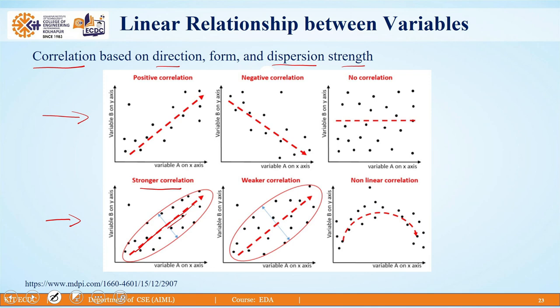In contrast, when points are far away from the center line, we call it a weaker correlation. So: points closer to the line indicate stronger correlation, and points farther from the line indicate weaker correlation. There is also another variation called non-linear correlation, where we cannot draw a straight line but can fit a curve — however, that concept is not the topic for this particular lesson.